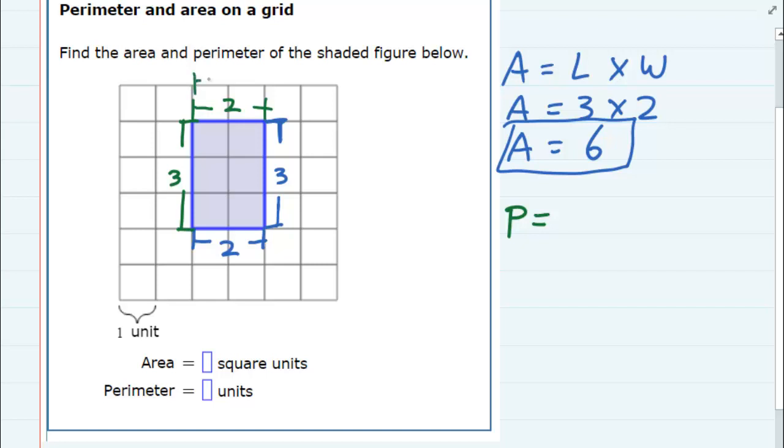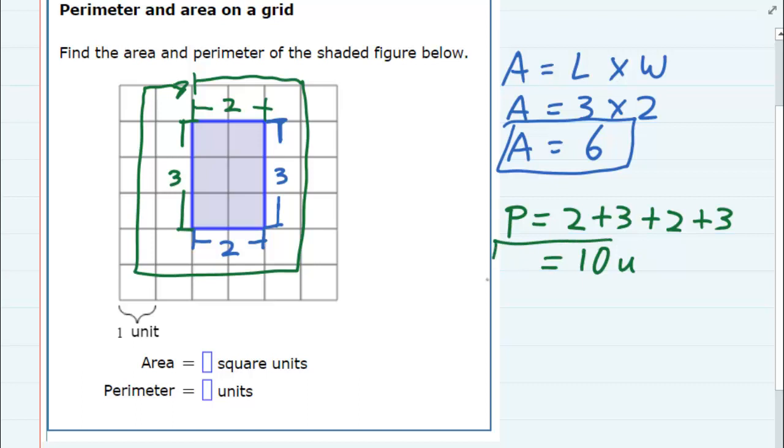So starting at the top here, and working my way around, the top one there is two, the right hand side is three, the bottom is two, and then that left hand side back up to the top is another three. So we're just adding up each one of those sides, and two plus three is five, plus two is seven, plus another three, gives me ten units. So my perimeter is ten.